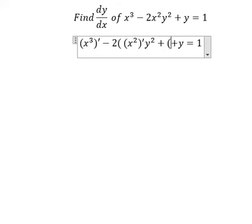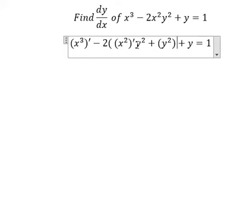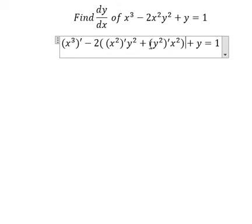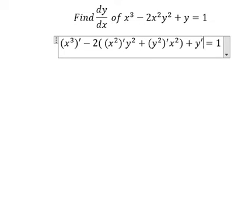Then we do first derivative of y square multiplied by x square. Then we need to do first derivative of y. You got the first derivative of y in here. First derivative of 1, you got zero.